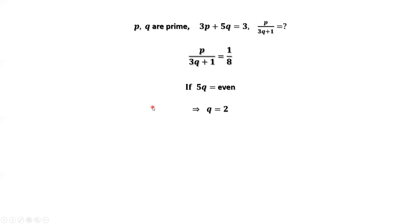Q equals 2. We replace Q by 2 from the given condition. Then we have 3P plus 5 times 2 equals 31. Solving this equation, we have P equals 7.